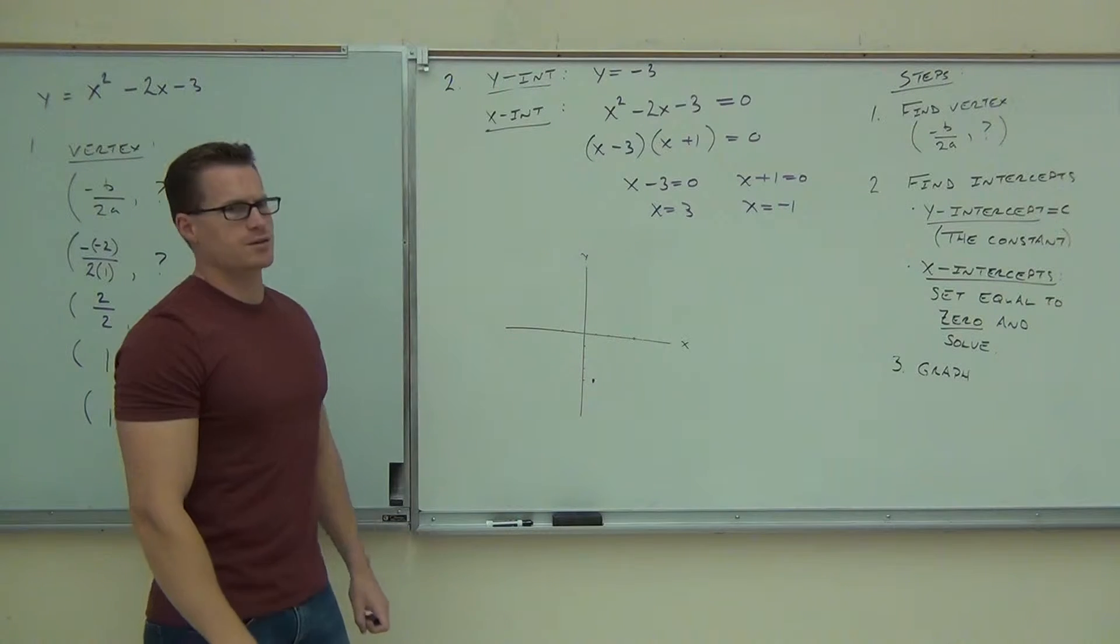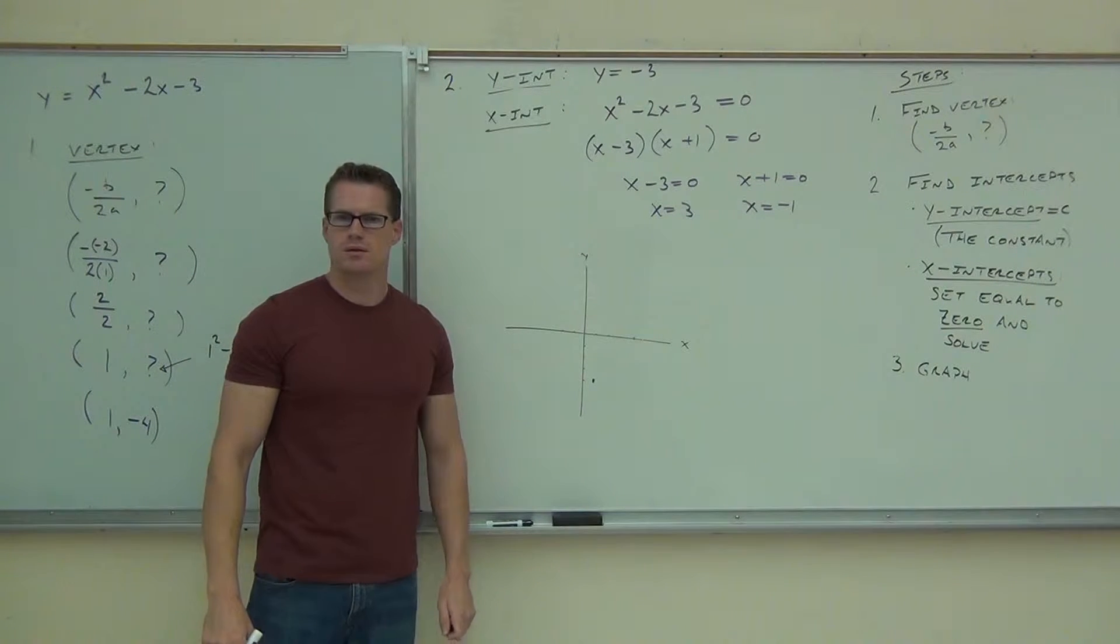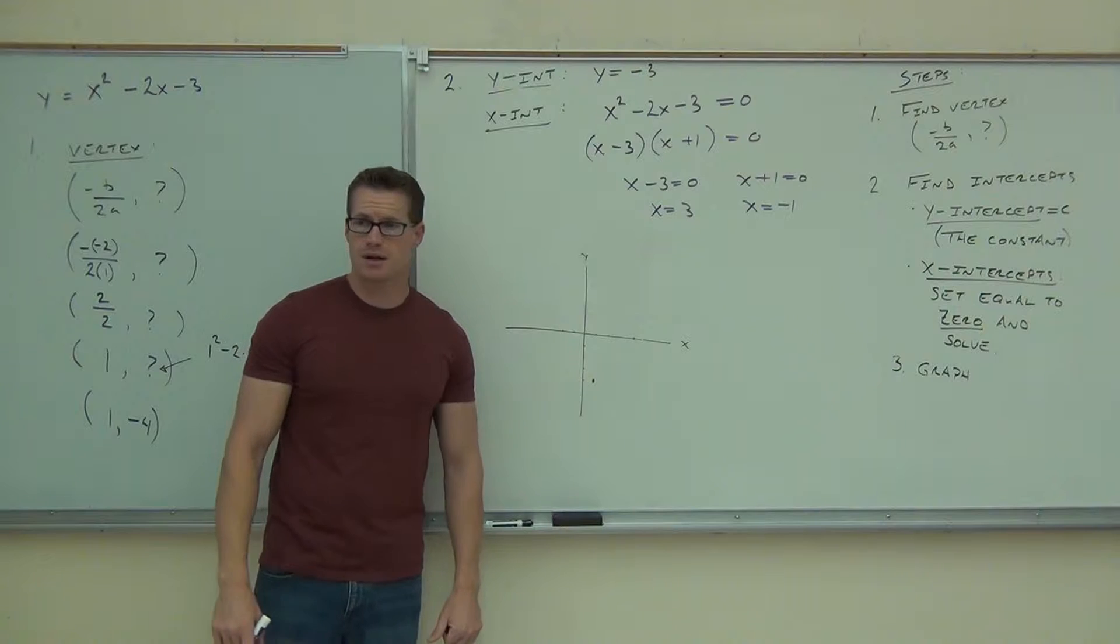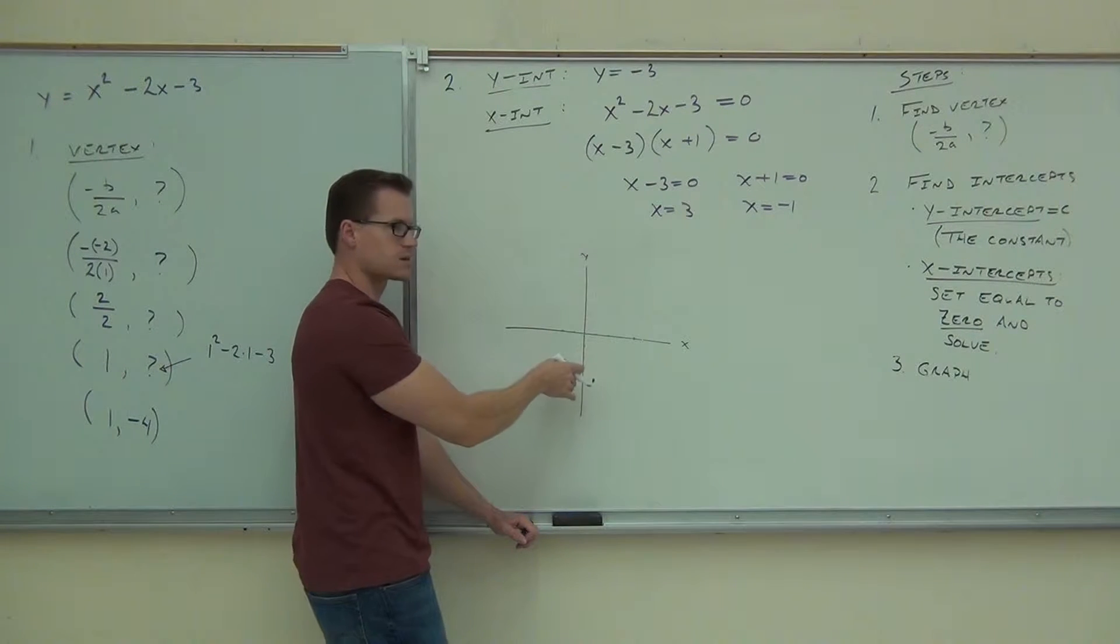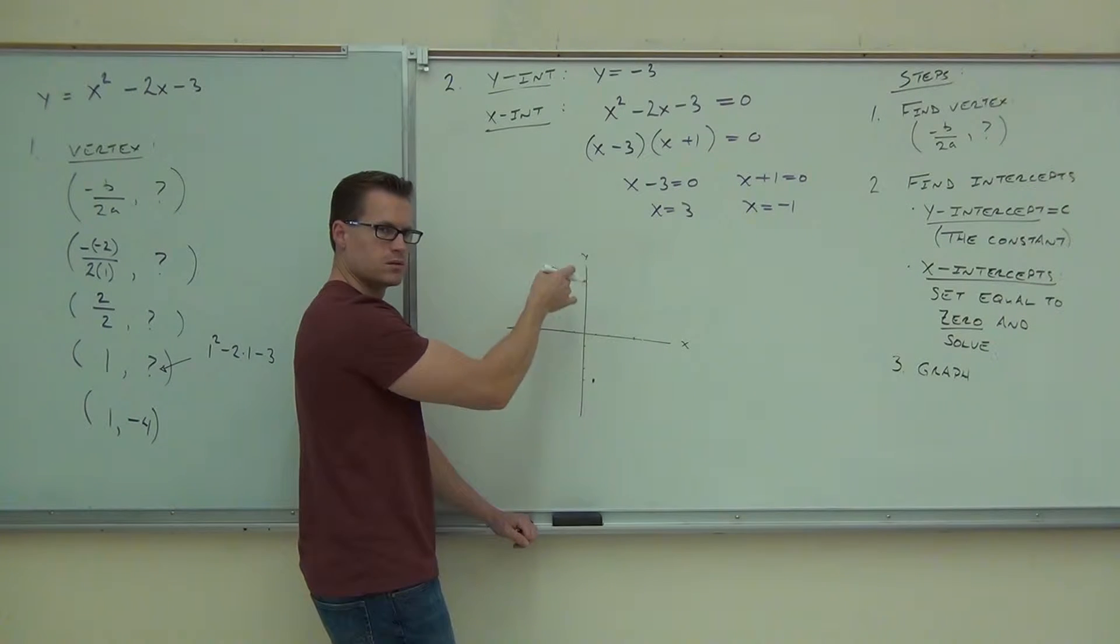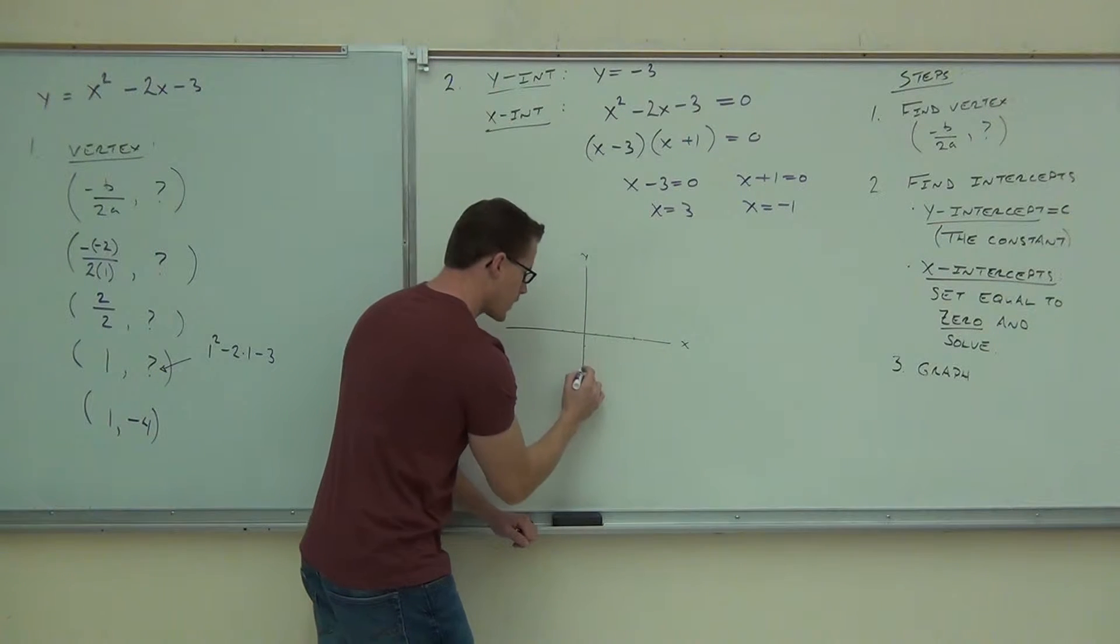What's our y-intercept? Go ahead and plot that if you haven't done that already. So negative 3, that says you're on the y-axis. You're going up or down? Definitely down. Negative right here.